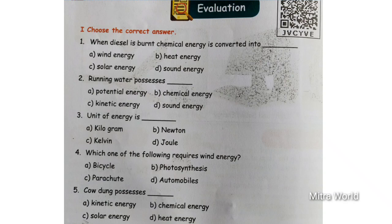Very good children, heat energy. Next — running water possesses dash. Options: potential energy, chemical energy, kinetic energy, sound energy. Running water possesses kinetic energy. Very good children! Kinetic energy is the answer. Unit of energy is dash. Option A: kilogram. Option B: newton. Option C: kelvin. Option D: joule. We know that unit of energy is joule.